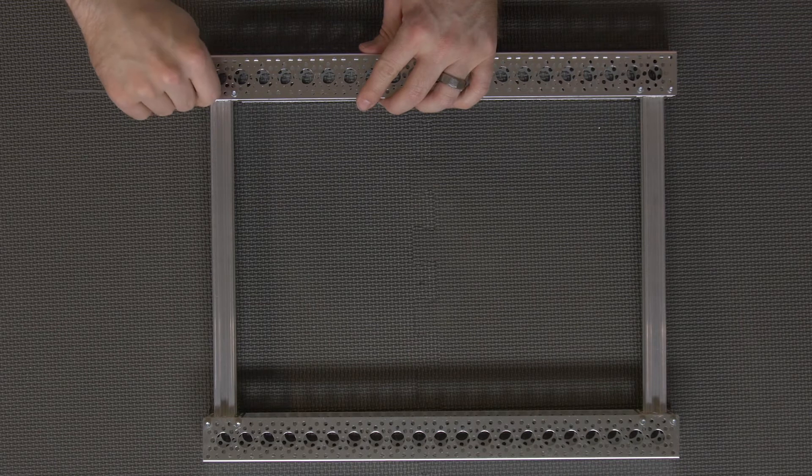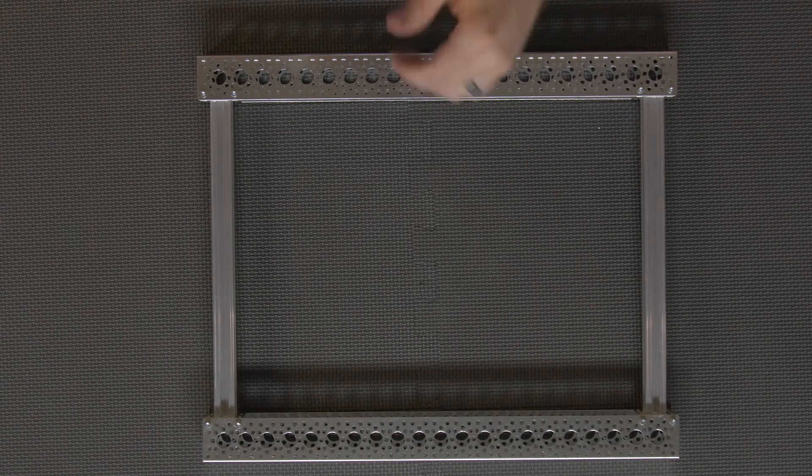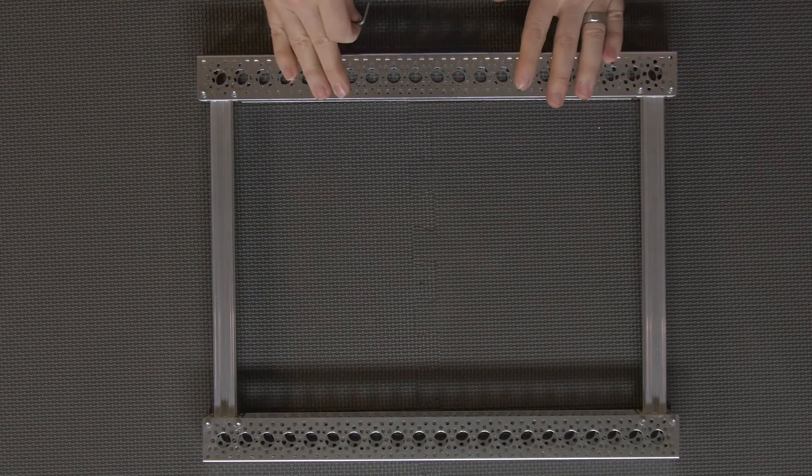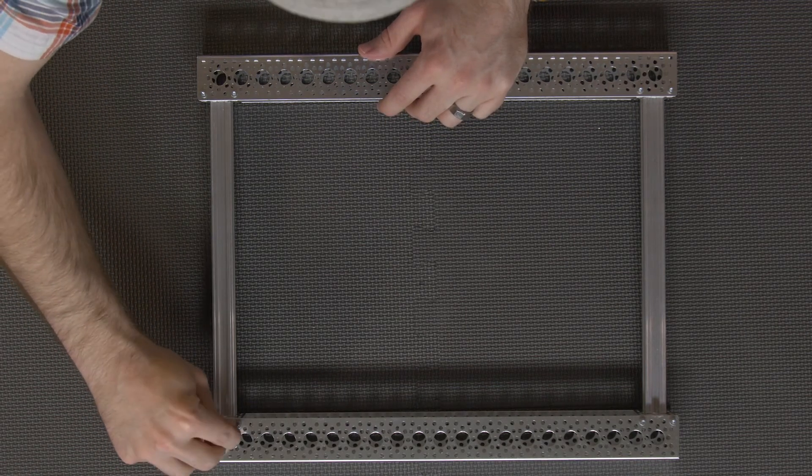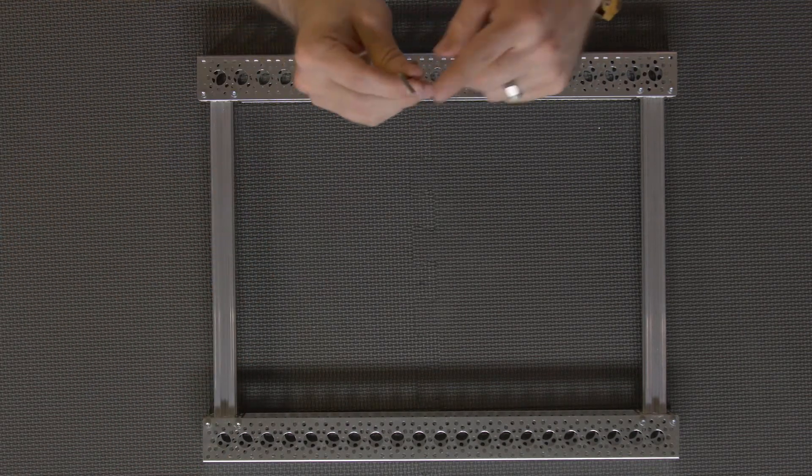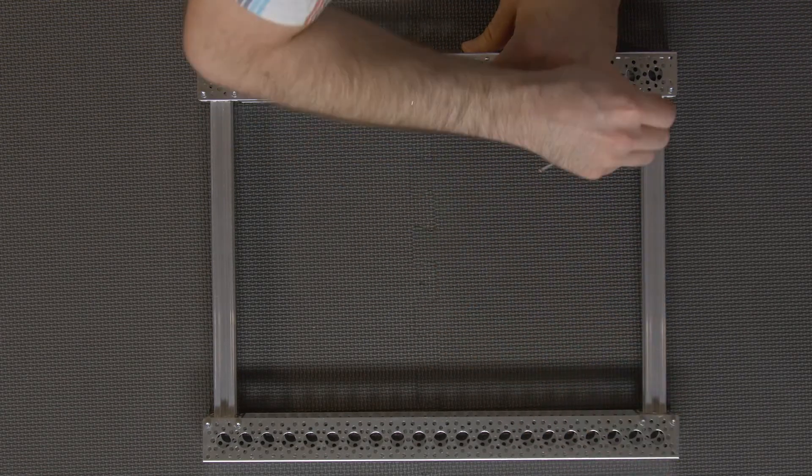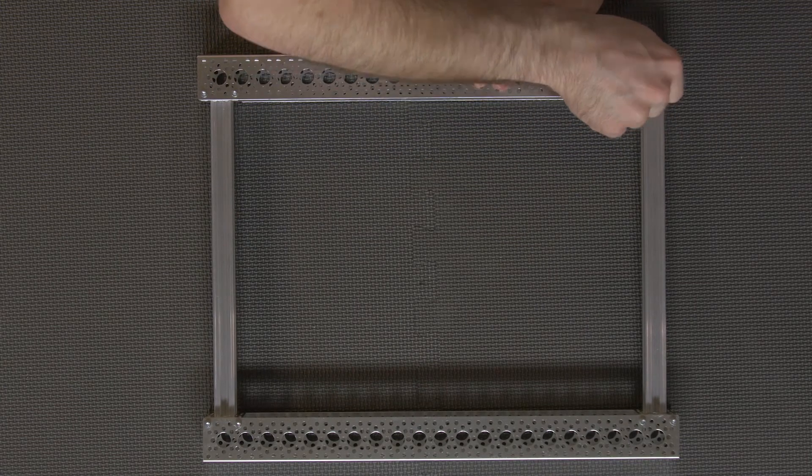The ball end of your hex key is going to be great for reaching in where you have to go at a certain angle or just quickly spinning a screw in place. Once you have everything pretty well positioned where you want and you're at the phase of going back through it and tighten everything up, the non ball end is going to be great for that. You can get a little bit more torque on that a little bit easier than with the ball end.